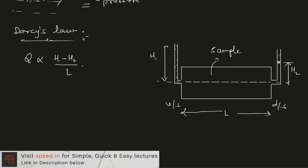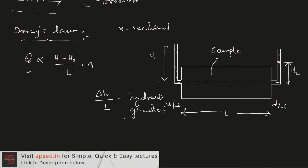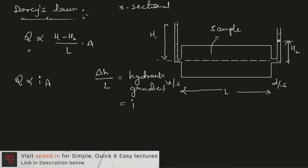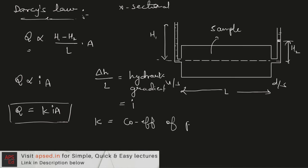Darcy found that discharge through the sample is proportional to the head difference (h1 minus h2) and inversely proportional to the length of the sample. Discharge is also directly proportional to the cross-sectional area. Replacing h1 minus h2 with delta h, the hydraulic gradient i equals delta h divided by L. So discharge q is proportional to i times area, and introducing the constant of proportionality k, Darcy's law becomes q = k·i·a.